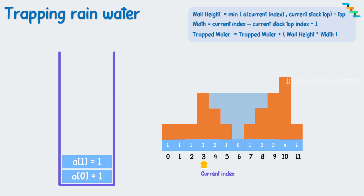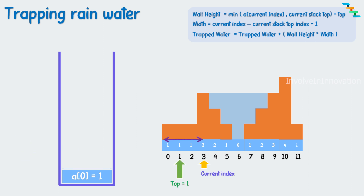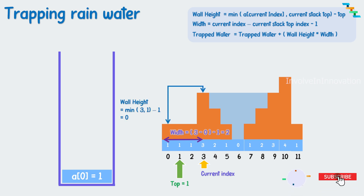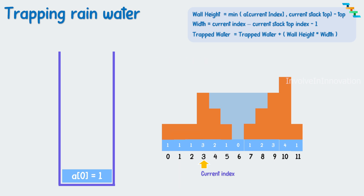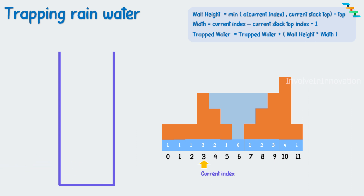Check if the current top of the stack one is greater than three. No, so pop the top. Mark one as top. Calculate the width: current index three minus current stack top index zero minus one, width is two. Calculate the wall height: minimum of left and right bar, which is minimum of three and one, minus top one. Wall height is zero. Trapped water result is still zero. Check if the current top is greater than three. No, pop the top, which makes the stack empty. If the stack is empty, there is no left bar to retain water, so skip. Now the stack is empty, add index three to the stack.